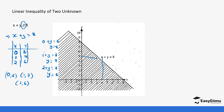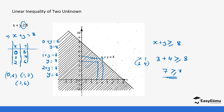For example, pick a value below the line, such as (3, 4) for x and y. The inequality says x plus y is greater than or equal to 8. So 3 plus 4 equals 7, which is not greater than or equal to 8 — not true. So below is the unwanted region. Now pick a value above the line, such as (6, 6): 6 plus 6 equals 12, which is greater than or equal to 8 — true. So values above the line are wanted. That's how you decide which side to shade.